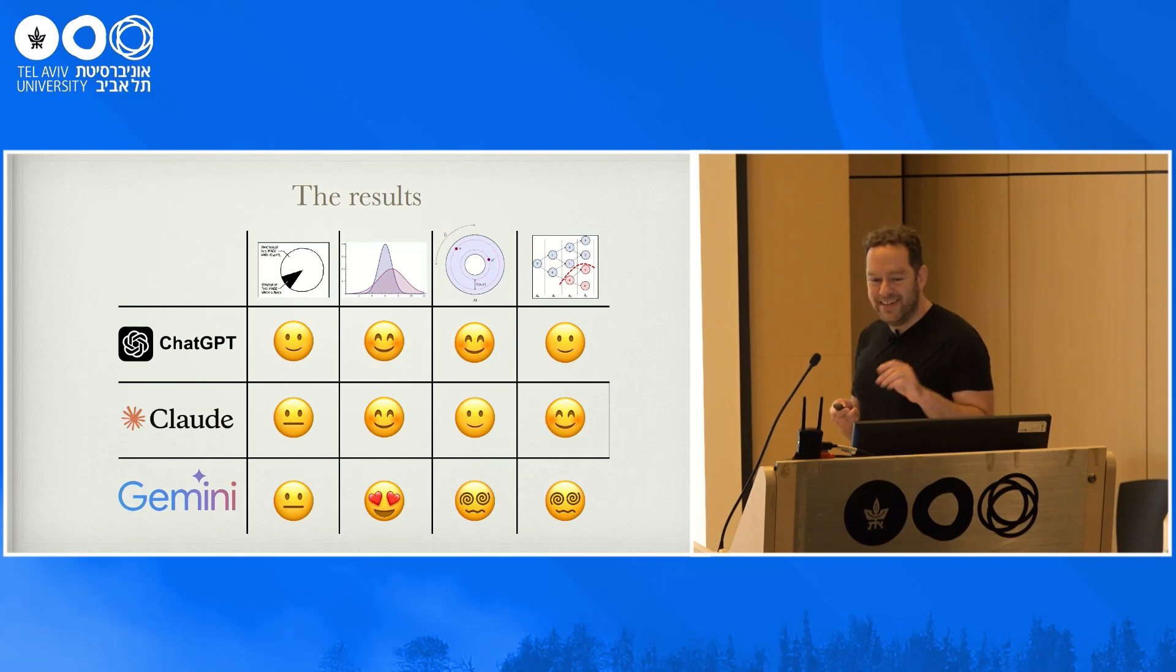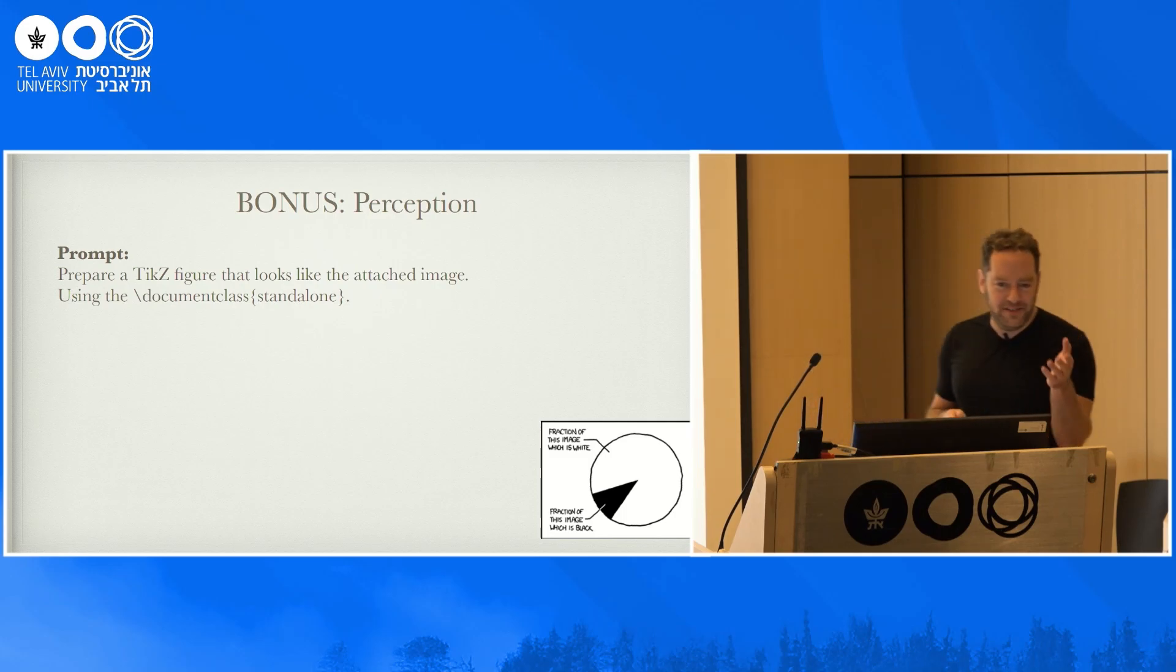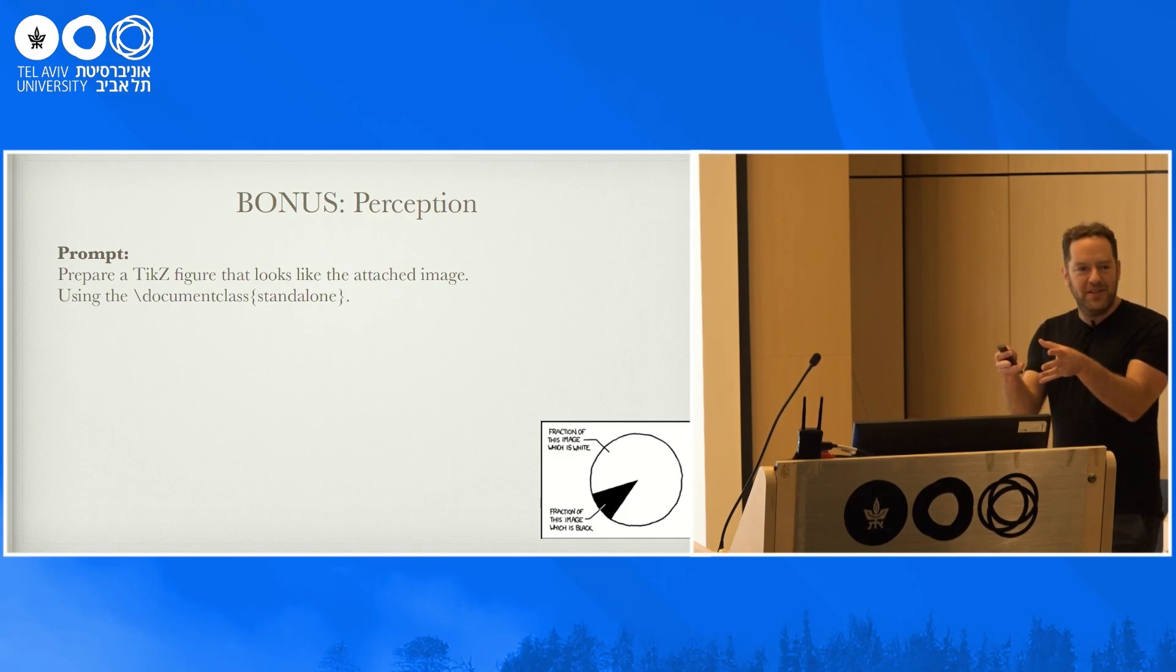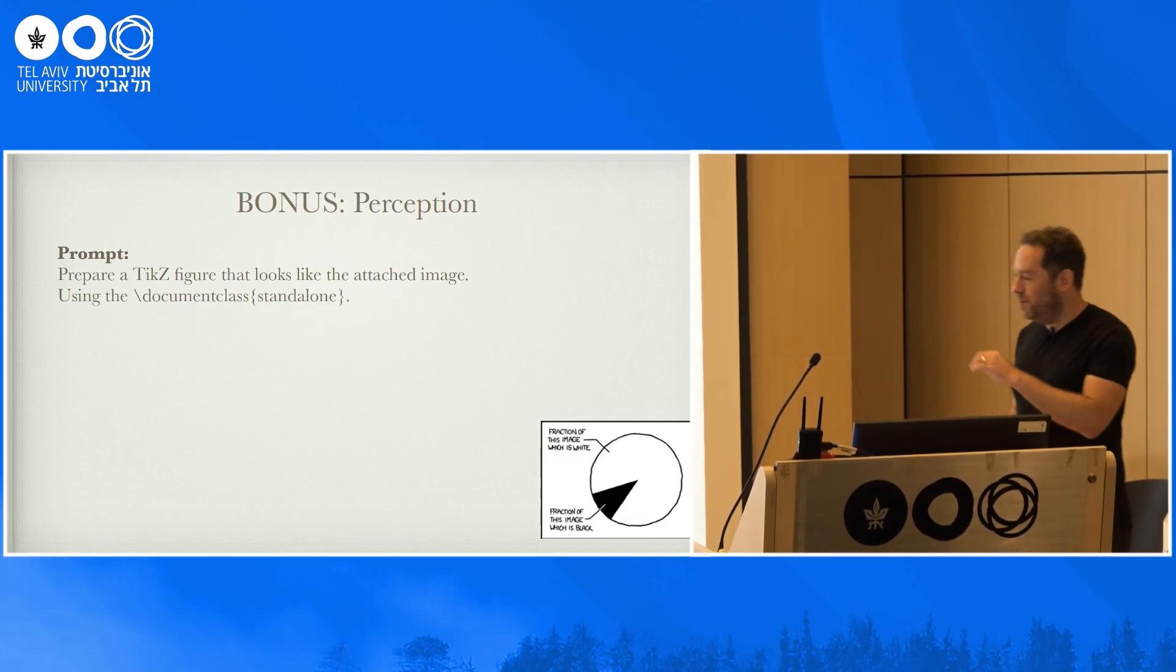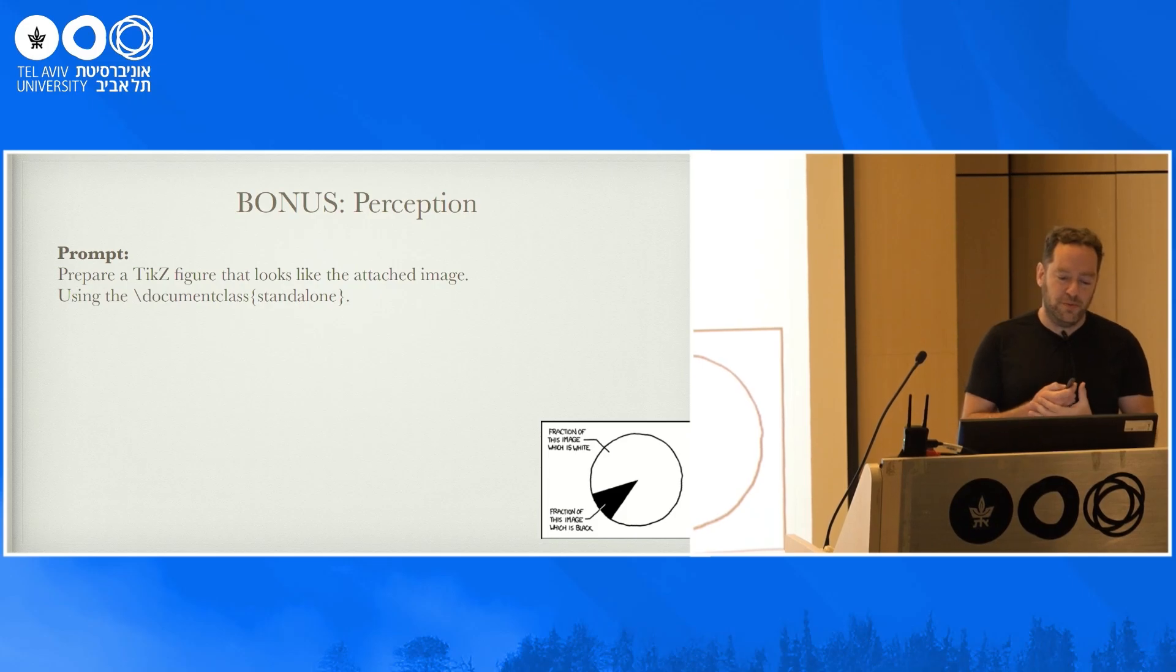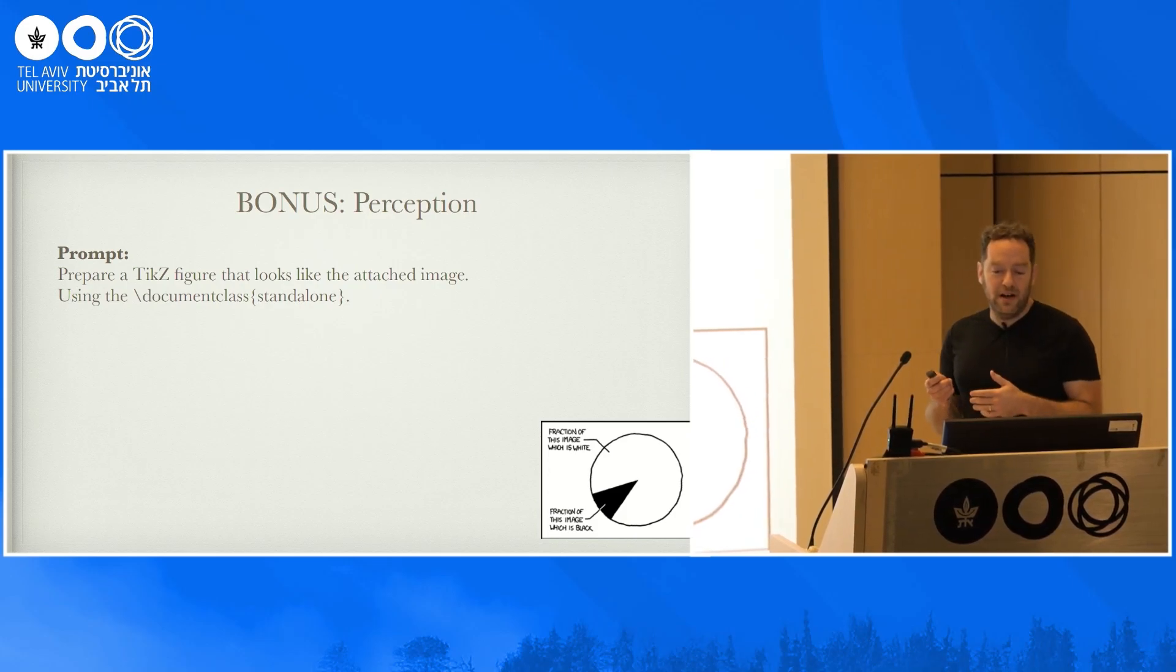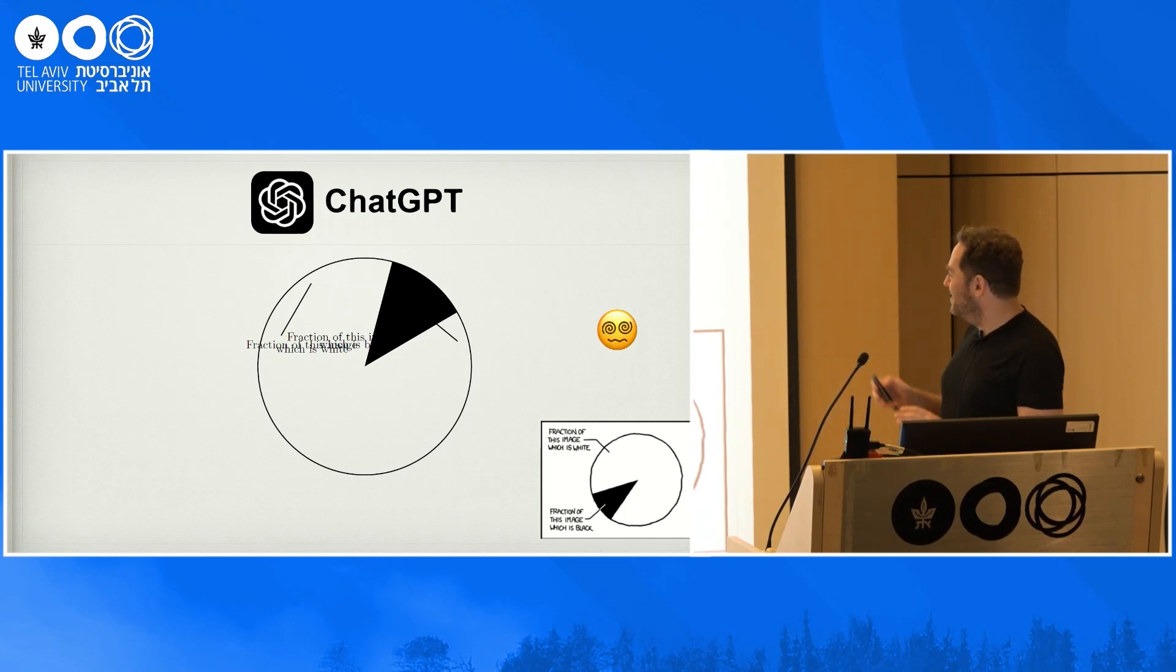And then if I have one more minute, so one bonus example is trying to use these methods like you suggested, basically just giving them an illustration and asking them to make this plot. Okay, so I gave them this PNG image, the hand-drawn PNG image of the pie chart and just asked the LLMs to prepare a TikZ figure. And the results are not as good. So this is what ChatGPT gave. I don't know what happened here, but it seems to sort of understand the basic elements but screw up the placement.